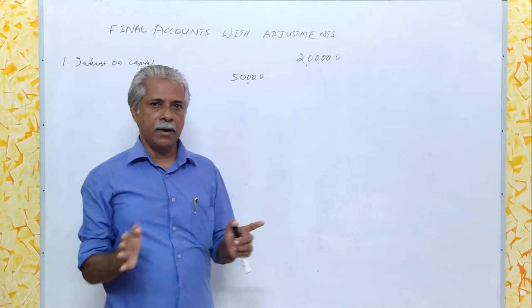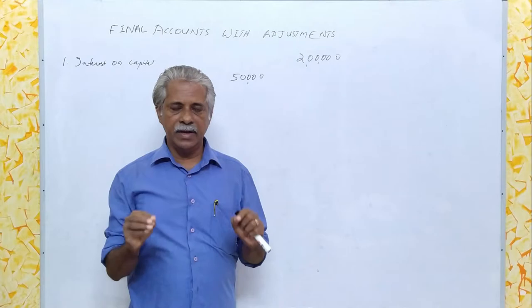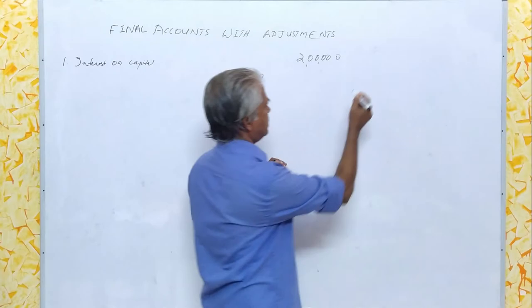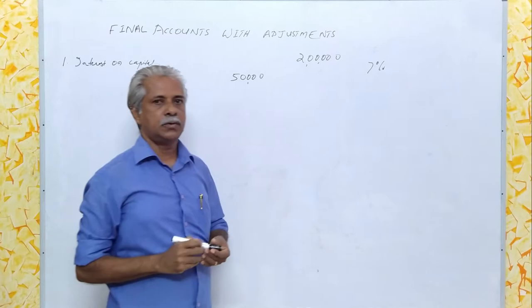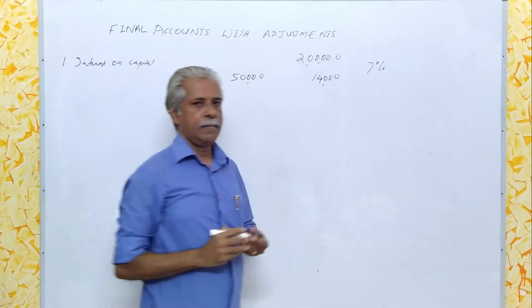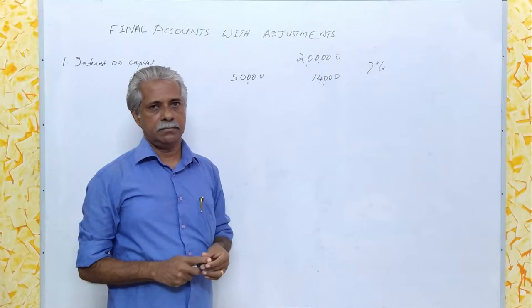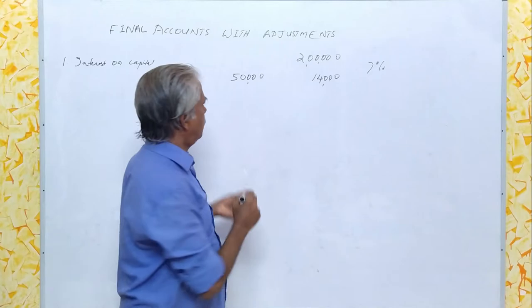Here, Rs. 50,000 cannot be considered as the real profit because the trader lost an alternative income — that is by way of interest if it was deposited with a bank at least, attracting a minimum interest rate of 7%. On Rs. 2 lakhs, that comes to Rs. 14,000. So, though there is a profit in the business concern to the extent of Rs. 50,000, the trader lost an alternative income of Rs. 14,000. Therefore, we can say that the real profit of the business is only Rs. 36,000.